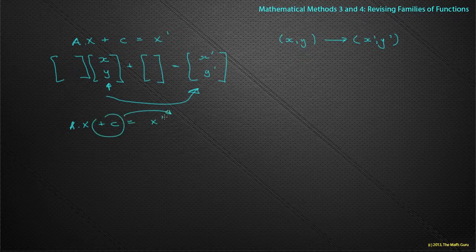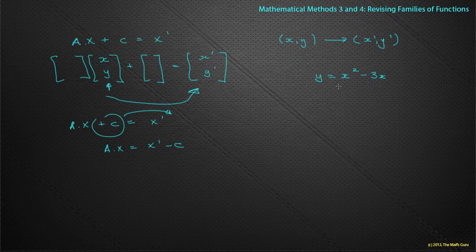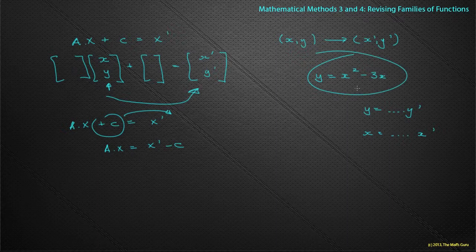Going back to the matrix algebra: this plus c has to move over first, so I have A·x = x-dashed minus c. I want to find x on its own, because we're going to be given an original function — something like y = x² - 3x — and want to know what the transformation is. Like we did in the previous video, if I can get x and y as functions of x-dashed and y-dashed, I can substitute into the original equation and find my new equation.